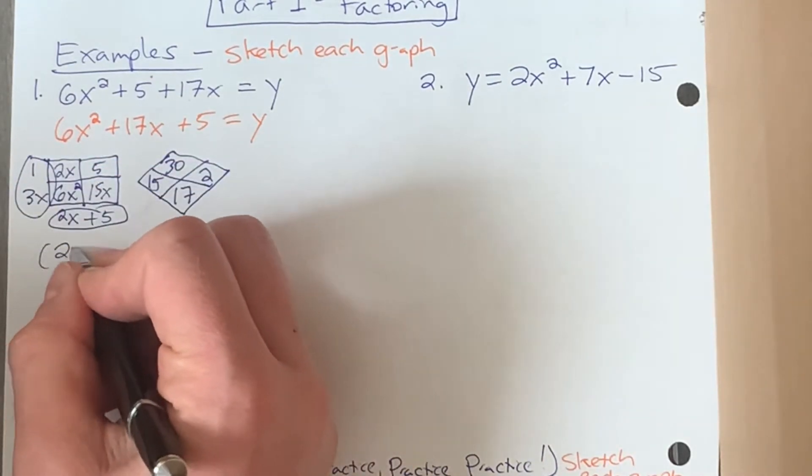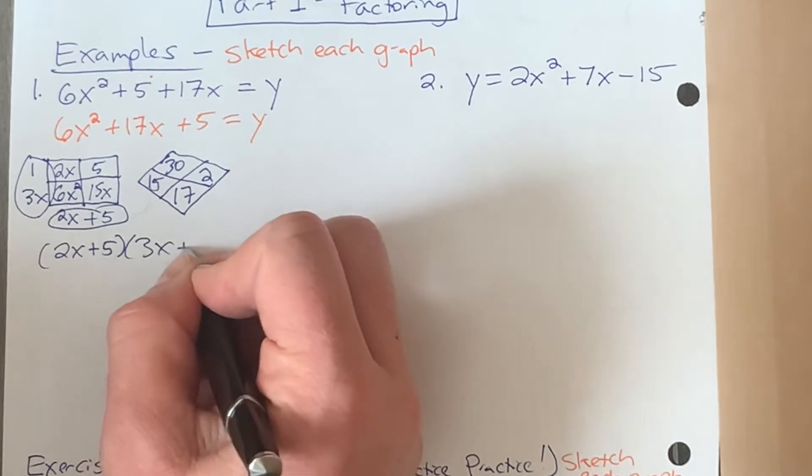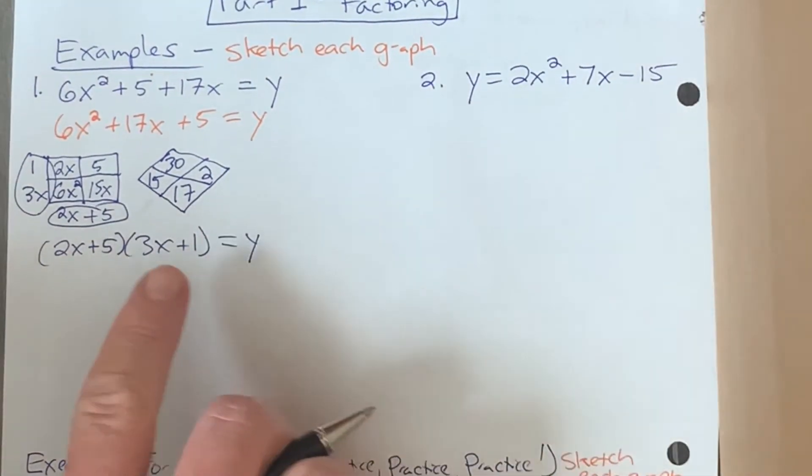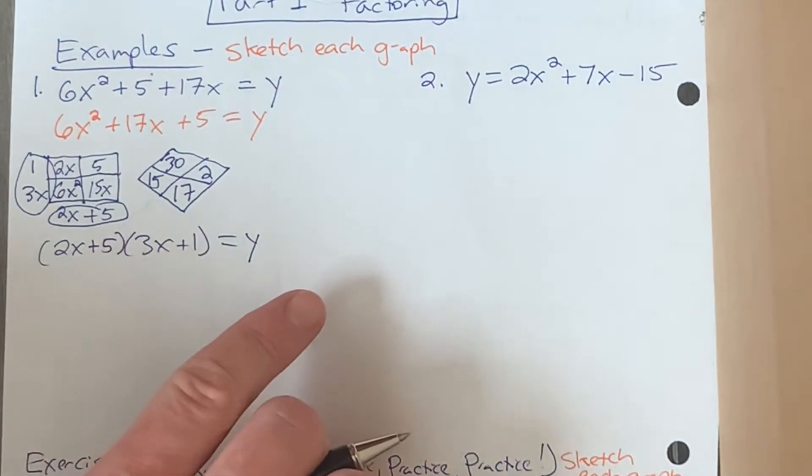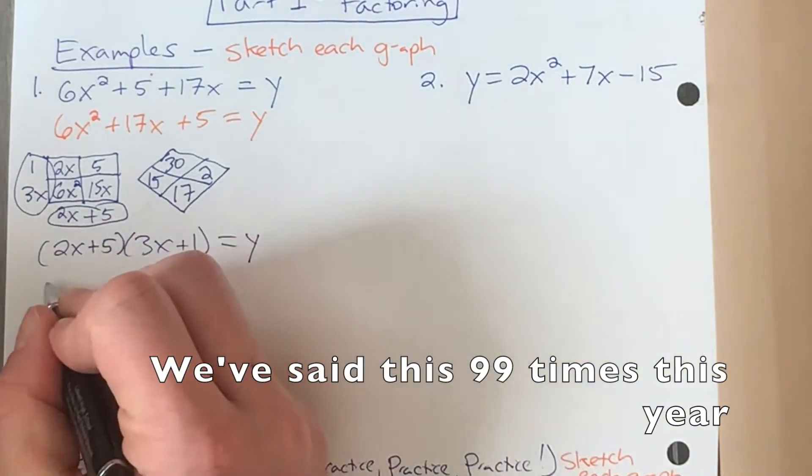And that's gonna help us get the x-intercepts. That's what the whole goal of this is here. So if you remind yourself, well, I just factored this here, how's this gonna help me get the x-intercepts? You gotta step backwards, and remember that thing we keep saying. The x-intercepts are the value of x when y equals zero.